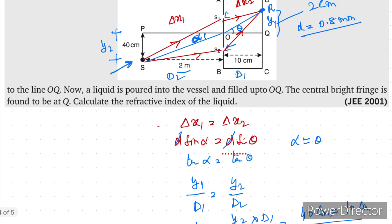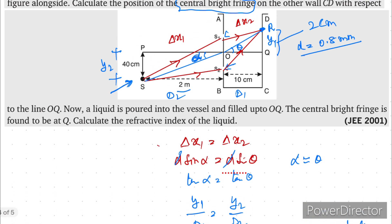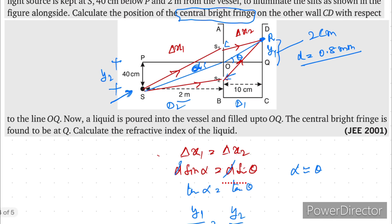In this question part 2 is also given, which reads as a liquid is poured into the vessel and filled up to OQ. The central bright fringe is found at Q. Now when the liquid is poured up to OQ, means in this position liquid is poured. Then now the central bright fringe is seen at Q, at this distance.